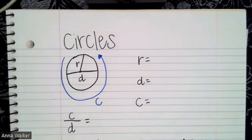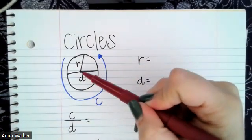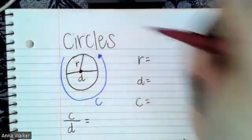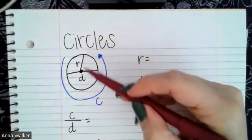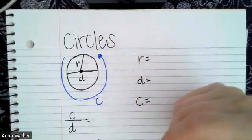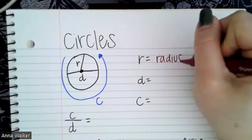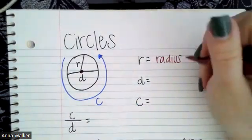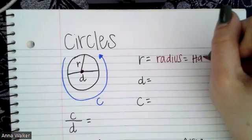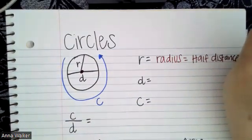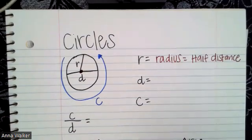The length r in a circle goes from the center of the circle — I'll draw a dot to denote the center — to any edge. This is called the radius of a circle. R stands for radius, which is half the distance from the center of the circle to the edge.